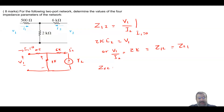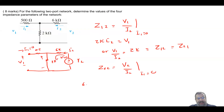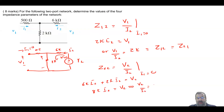Finally, find z22 = v2/i2 when i1 = 0. Apply KVL: 6k·i2 + 2k·i2 = v2, so 8k·i2 = v2, and therefore v2/i2 = 8 kΩ = z22.